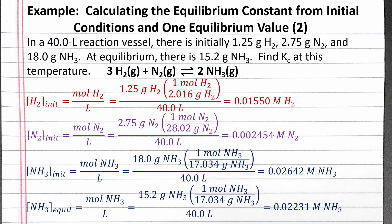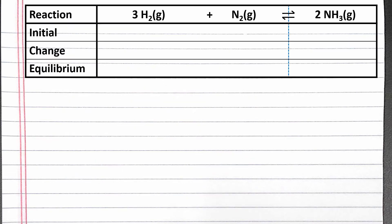Now that we have concentrations, we can create our RICE table. Our RICE table has the reaction as the first row, initial concentrations as the second row, the change in concentration as the third row, and the equilibrium concentrations as the last row. We can plug in the initial concentrations and the equilibrium concentration of ammonia, which we just calculated.